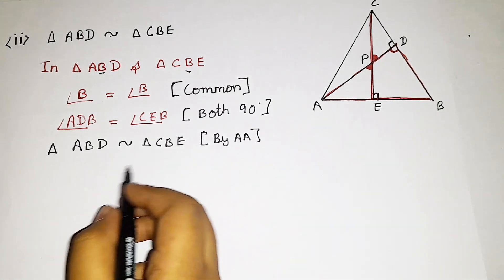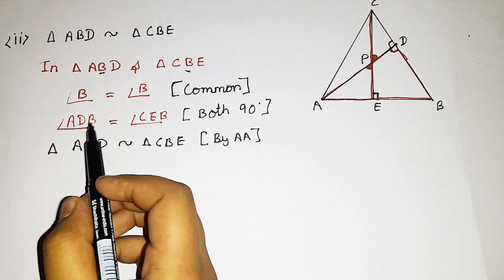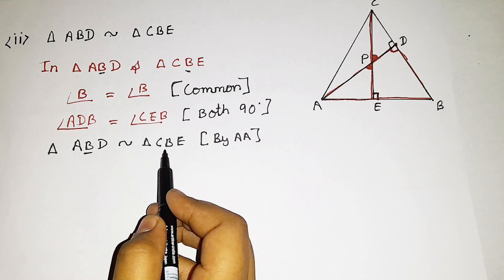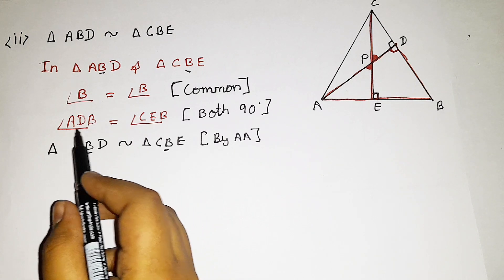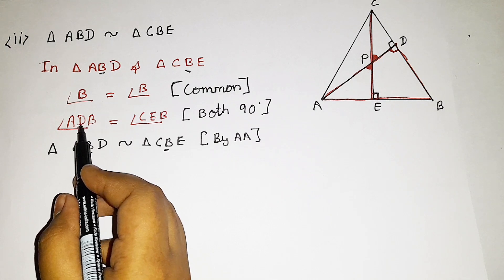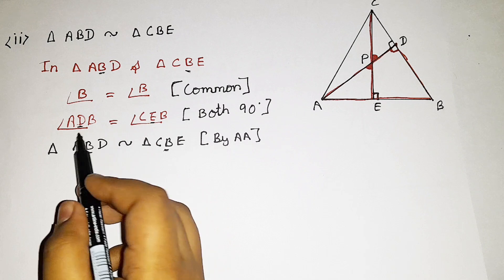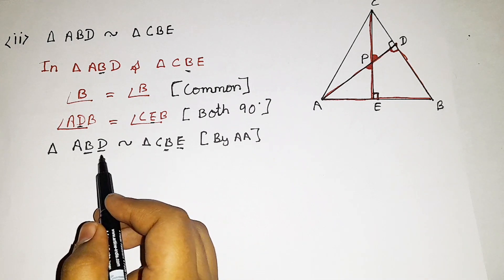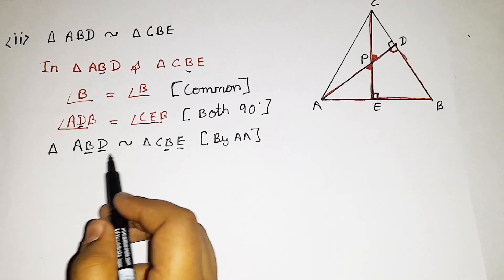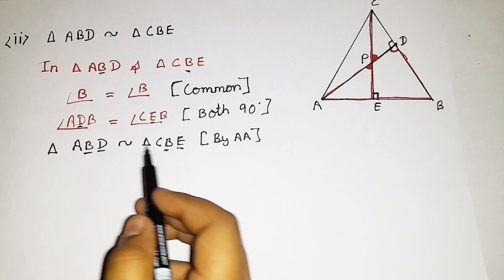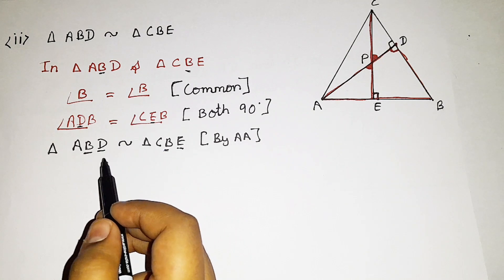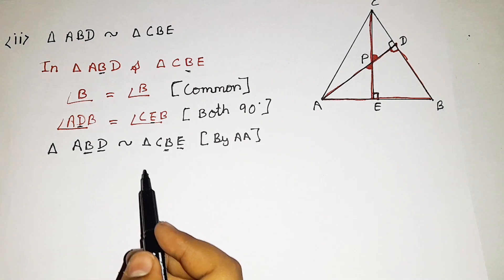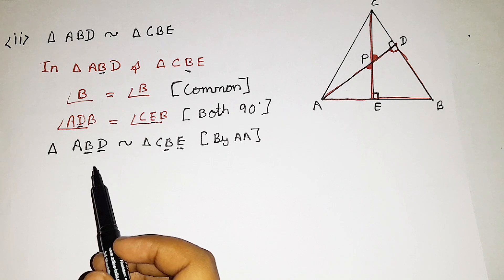Please be careful while writing the triangles. Here angle B is equal to angle B — the same angle. And angle ADB has D in the middle, while angle CEB has E in the middle — angle D equals angle E, both 90 degrees. According to these corresponding values, we predict the order of vertices in the similar triangles. Be careful while writing the triangles.